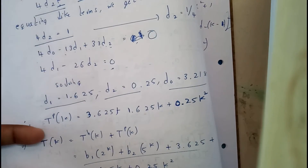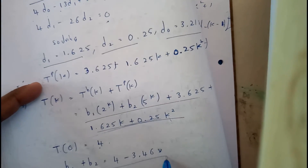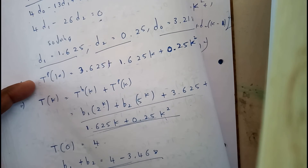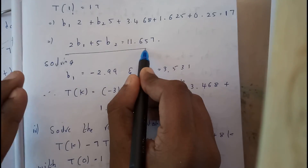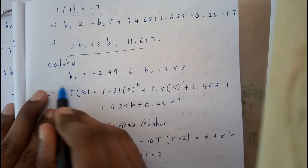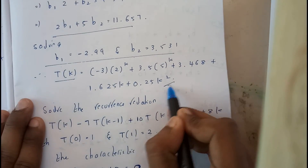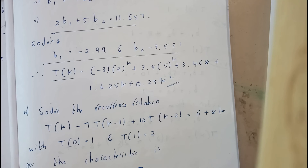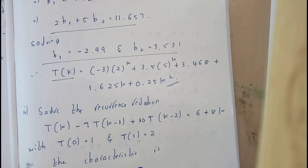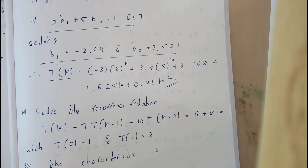The initial conditions given are t(0) = 4 and t(1) = 70. Substituting k = 0 into the complete solution gives b1 + b2 = 0.532. Substituting k = 1 gives another equation. Solving both equations simultaneously yields the values of b1 and b2, which we substitute back into the complete solution to get the final answer. I hope everyone got a clear idea on how to solve these kinds of problems.